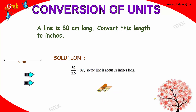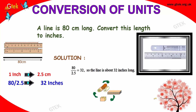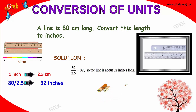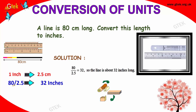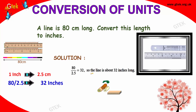Now, we have a typical example of a line which is 80 centimeters long. I want to convert this into inches. So, centimeters to inches: 1 inch is equal to 2.5 centimeters. So 80 divided by 2.5, you get 32 inches. So the line is about 32 inches.